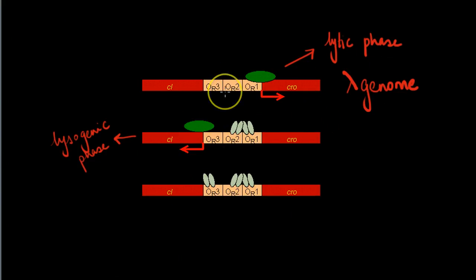a lower concentration of the CI protein would result in the CRO gene being transcribed, which will lead the phage towards the lytic phase.